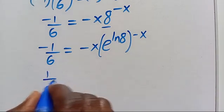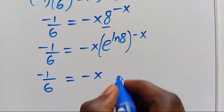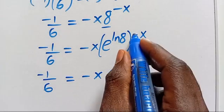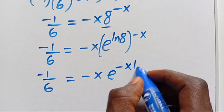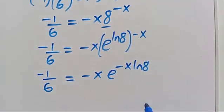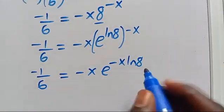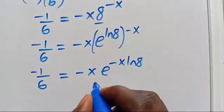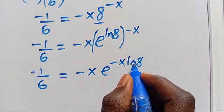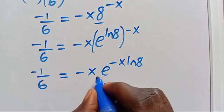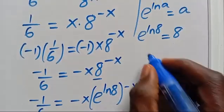From here we have 1 divided by minus 1 divided by 6 equals minus x multiplied by ln(8). We also want to make sure that this power is equivalent to the other side. We didn't have ln(8) here, so let's multiply through by ln(8).